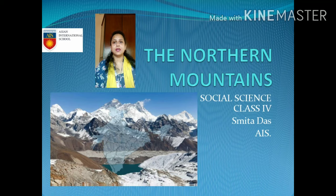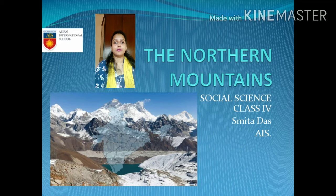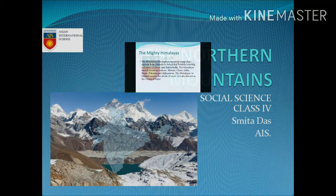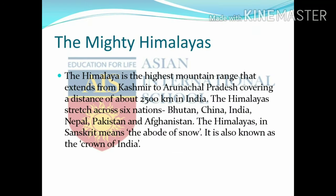Today I will be studying the second chapter of social science, which is the Northern Mountains. In this chapter we will read about the mighty mountains, the divisions, and the life of the Himalayan people. Now let us start with the mighty Himalayas. The Himalaya is the highest mountain range that extends from Kashmir to Arunachal Pradesh, covering a distance of about 2500 km in India.